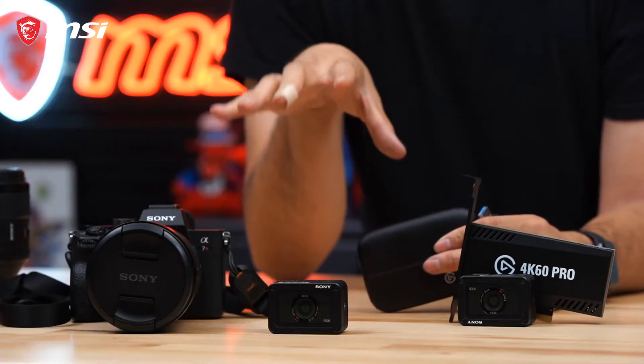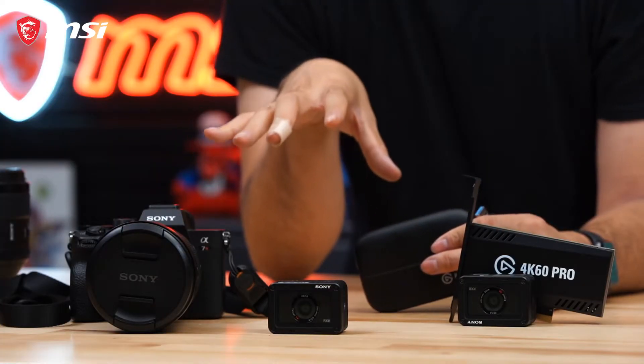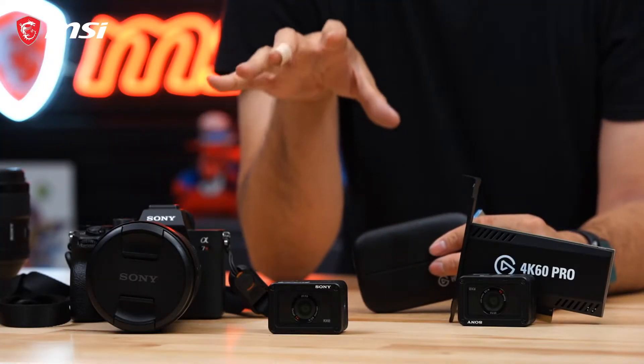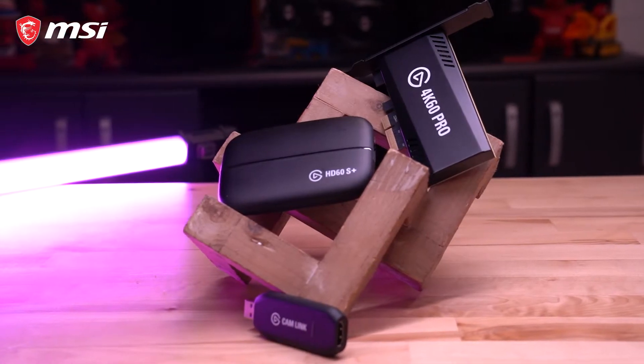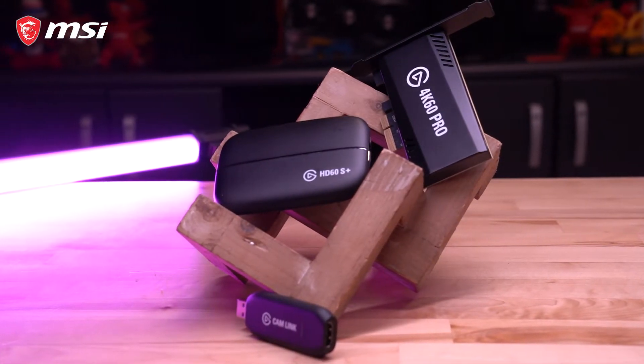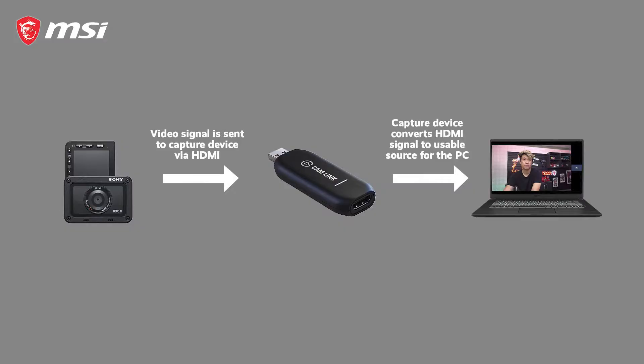If I wanted to use one of these cameras as a webcam, I'm going to need to pair it with a capture device like one of these from Elgato. Simply put, these Elgato devices take the HDMI signal from the cameras and convert it into a usable video source that your programs like Discord, OBS, or Zoom will recognize.